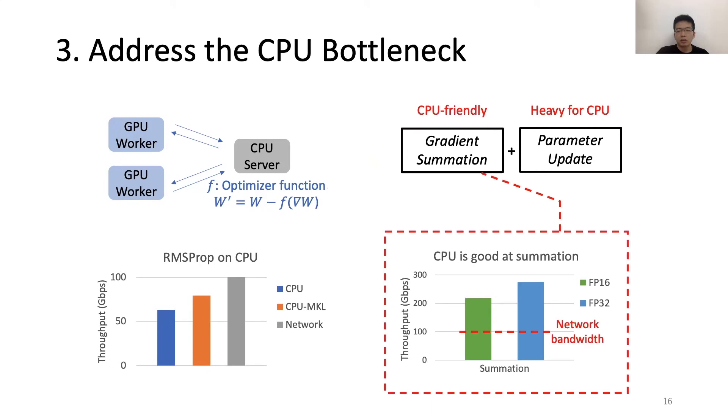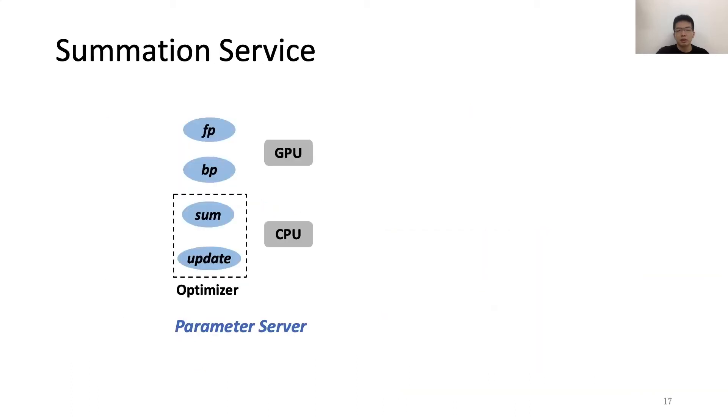Here's a figure showing the summation throughput on CPU. We use synthetic FP16 and FP32 tensors, which are two common data types for deep learning. We find that both of their summation throughput is much higher than the network bandwidth, meaning the CPU summation is faster than the network.